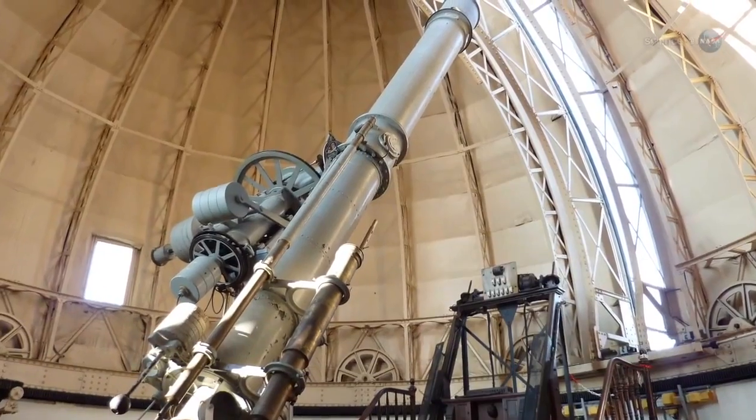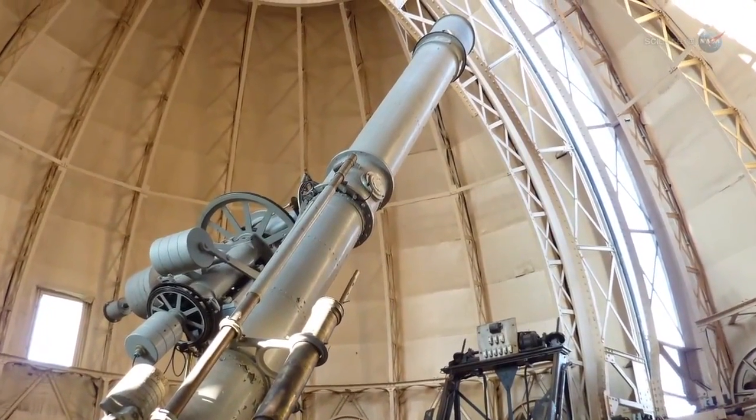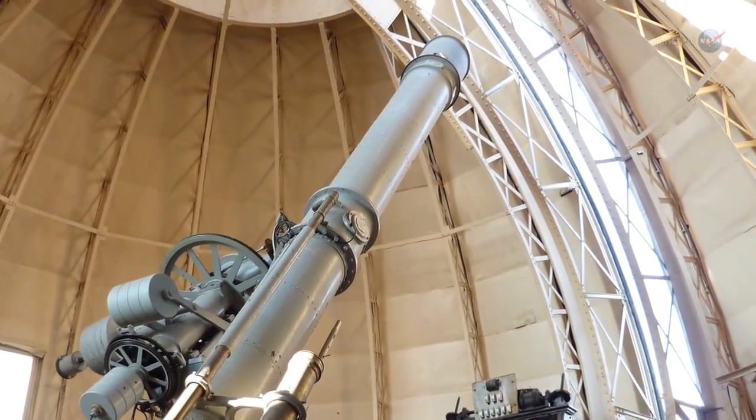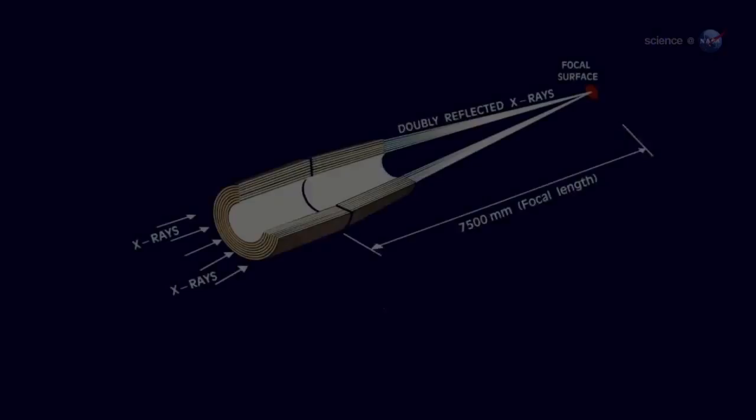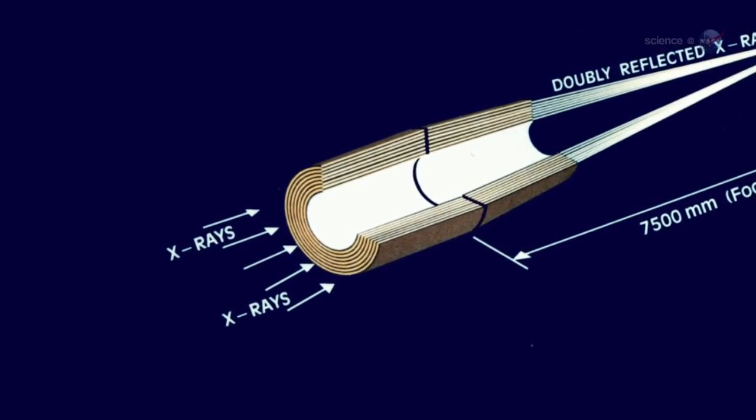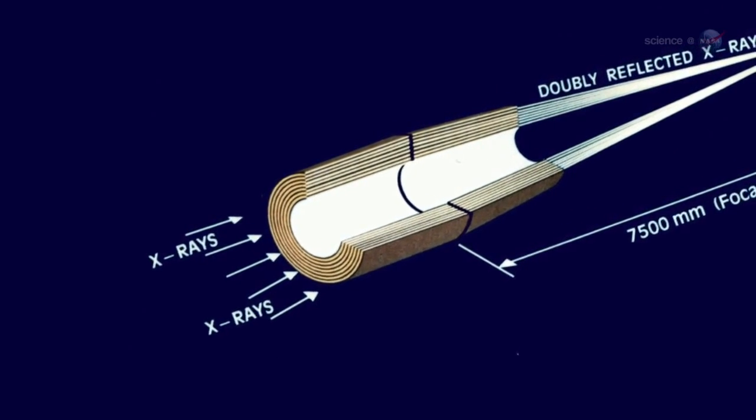Normal lenses can't focus X-rays at all. Glass bends X-rays only a minuscule amount, not enough to form an image. X-ray telescopes are an entirely different kind of telescope consisting of many concentric shells.